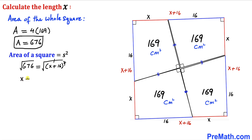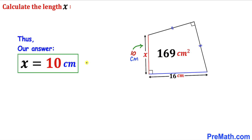x plus 16 equals the square root of 676, which is simply 26. We are going to pick the positive 26 since we are dealing with side lengths and they are always positive. Now let's isolate x by subtracting 16 from both sides, so therefore our x value turns out to be 10 centimeters. Thanks for watching and please don't forget to subscribe to my channel for more exciting videos.